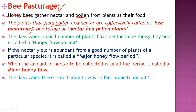What is the honey flow period? When there is a good number of plants providing nectar to be foraged by bees, that is called the honey flow period — the period when plants continuously provide nectar to honeybees. If the nectar yield is abundant from a good number of plants, it is called the major honey flow period. When the amount of nectar is very little or in small quantity, that period is called the minor honey flow period.